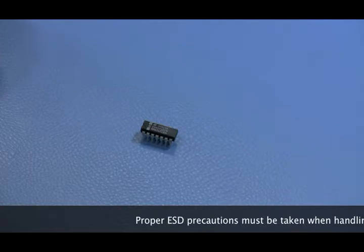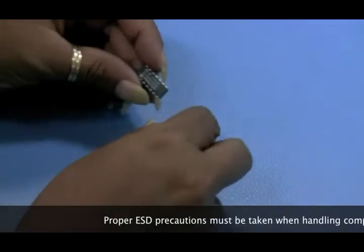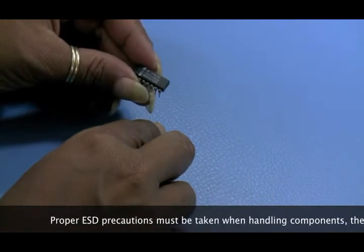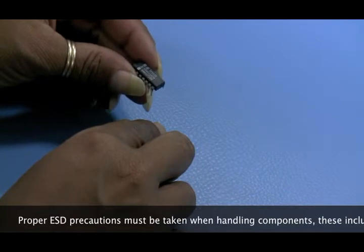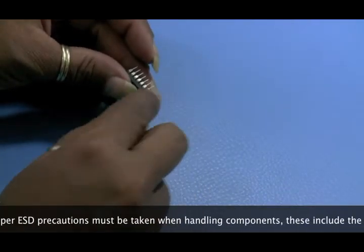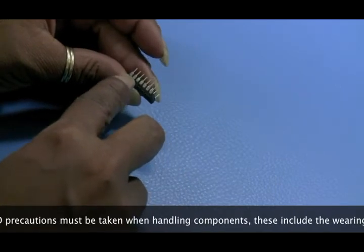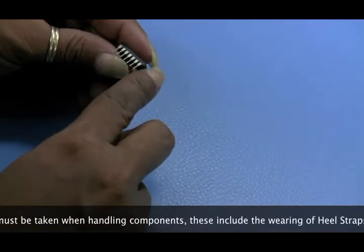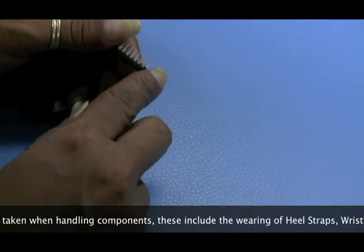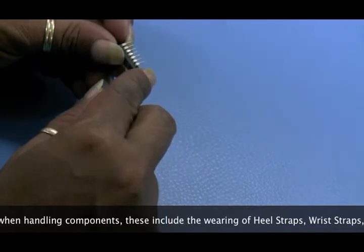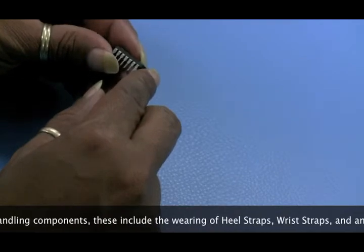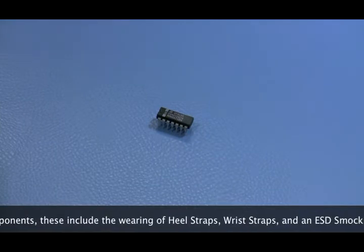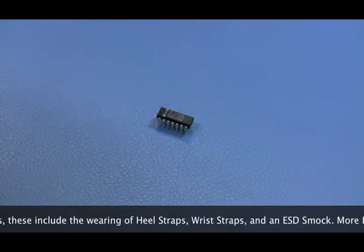First we're going to verify the part number and date code and to make sure the correct manufacturer is received. We will also verify the pin count against the manufacturer's data sheet. We will then inspect the leads and after doing so we'll begin taking our photos.